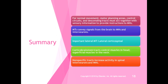For normal movement, motor planning areas, control circuits, and descending tracts must act together with sensory information to provide instruction to motor neurons. Motor tracts convey signals from the brain to motor neurons and interneurons. The most important lateral muscle tract is the lateral corticospinal tract, which drives most voluntary movement; corticobulbar tracts control muscles of the head and superficial neck muscles; and non-specific tracts increase activity in spinal interneurons and motor neurons.